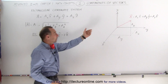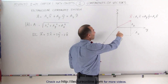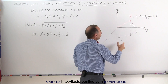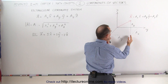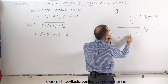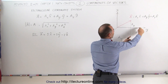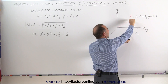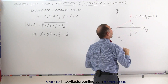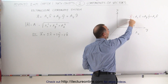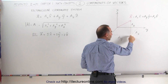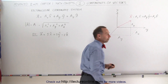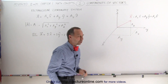Here we have an illustration of that. Let's say we have a vector a that has an x, a y, and a z component. Notice that this here represents the length of the y component, this represents the length of the x component, and this here represents the length of the z component. Notice that the tip of the vector, if you come straight down to the x-y plane, this would be the point directly below the tip of the vector. That's how you want to look at it.